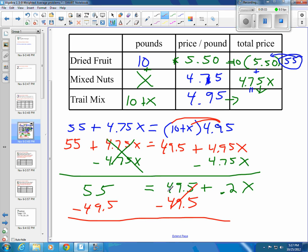The 49.5's cancel or go to 0. And then 55 minus 49.5 is 5.5. And that's going to be equal to 0.2X.